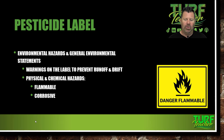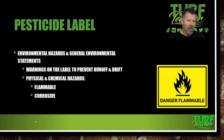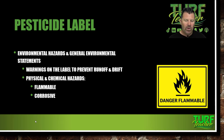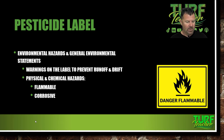Environmental hazards and general environmental statements: warnings on the label to prevent runoff and drift. So many guys call me and say, hey Eric, it's 95 degrees today, can I spray? They're not even taking into consideration that it's a 15-mile-an-hour wind because we have a big storm coming in. That's going to cause drift. I'm not worried about temperature when the winds are that high. Physical and chemical hazards: whether that's flammable or corrosive — you're going to see a symbol like that. Danger: Flammable. Any pesticide that's flammable I don't really want to mess with.